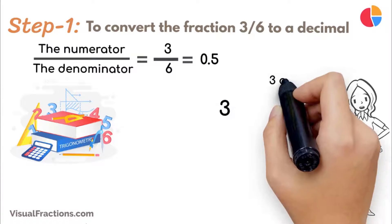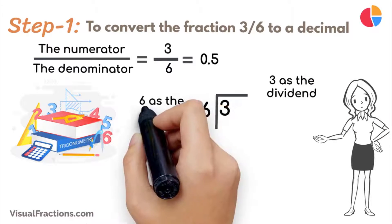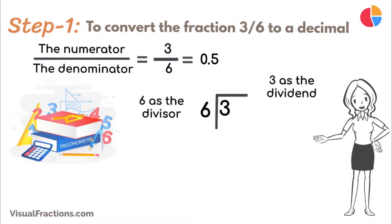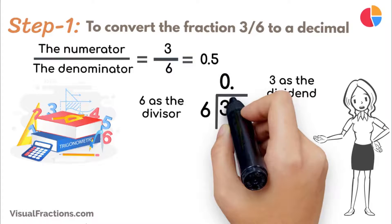Place 3 as the dividend and 6 as the divisor. Since 6 doesn't fit into 3, place a decimal point in our quotient and bring down a 0, making it 30.